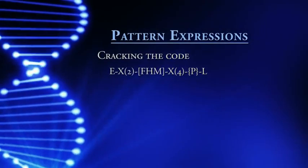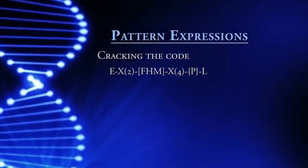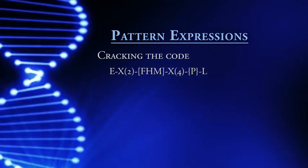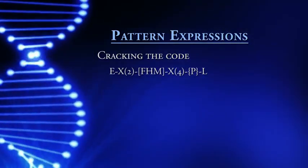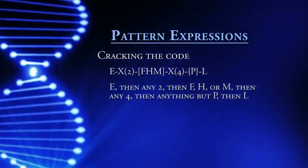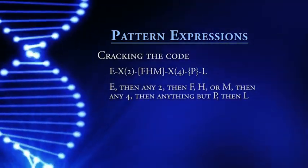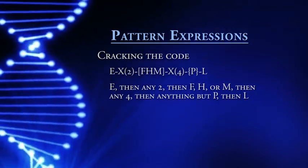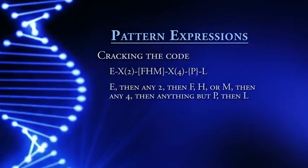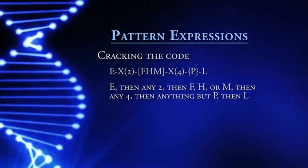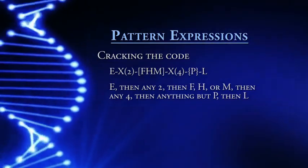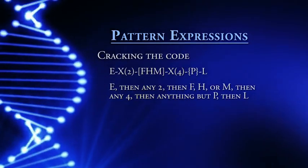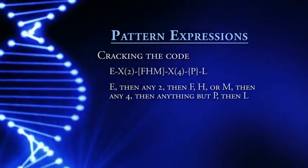Now let's look at a longer hypothetical regular expression that explains most of the possible scenarios. The pattern reads: E, X(2), [FHM], X(4), {P}, L. It means there is an E (glutamic acid) in the first position. X(2) means followed by any two amino acids. In the fourth position would be F, H, or M. Then positions five through eight can be anything. Braces mean 'not' — so in this case, not proline in the ninth position, followed by leucine.